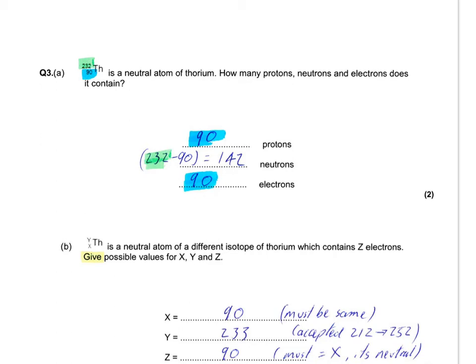So, this is the Particles Homework Booklet Question 3. We've got 232/90 thorium. It's a neutral atom of thorium. How many protons, neutrons and electrons does it contain?